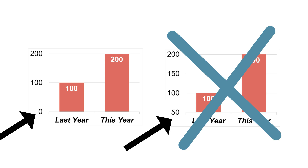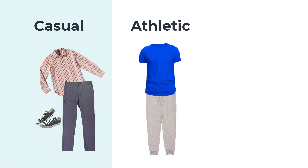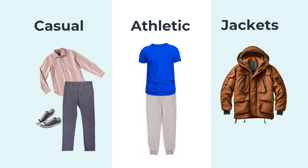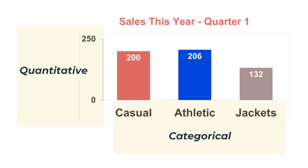Now suppose our clothing store sells three categories of clothing: casual, athletic, and jackets. We can compare the number of sales from each category. In this bar chart, one axis is quantitative — this means that it is numeric, something that can be measured. In the second axis, the data type is categorical. These are categories; they are not numbers and they don't have a natural order, which means that we can sort them any way that we want to.